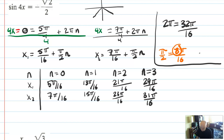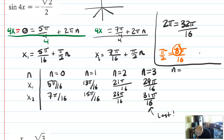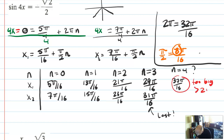31π over 16 is pretty close since 2π is 32π over 16, so this is probably the last solution from 0 to 2π. If n equals 4, I would add 8 to get 37π over 16, and that's too big — greater than 2π — so I would not list that solution. I have all 8 solutions here, so I'd box those up and call it a day.